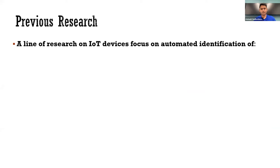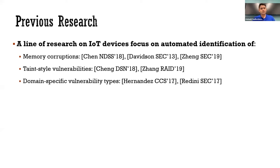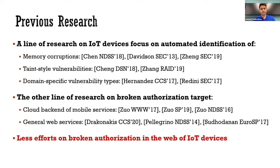A line of previous research focuses on vulnerability detection of IoT devices, targeting memory corruptions, taint-style vulnerabilities, and other domain-specific vulnerabilities. The other line of research focuses on the broken authorization problem, but the target programs are not web applications of IoT devices — they focus on cloud backends. To the best of our knowledge, this is the first work that focuses on exposing broken authorization problems in the web of IoT devices.